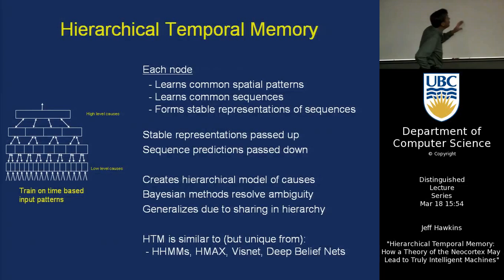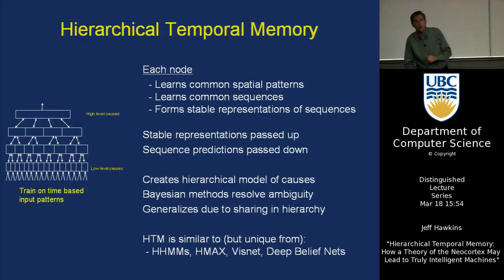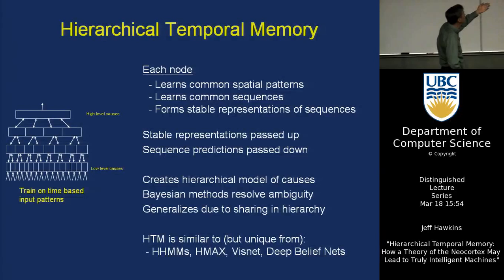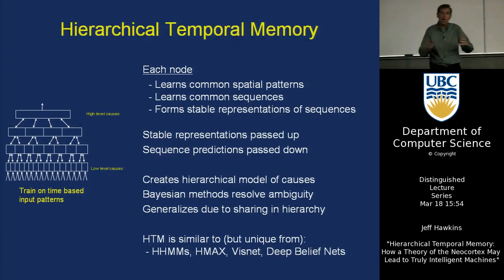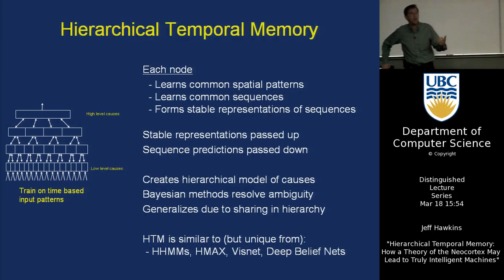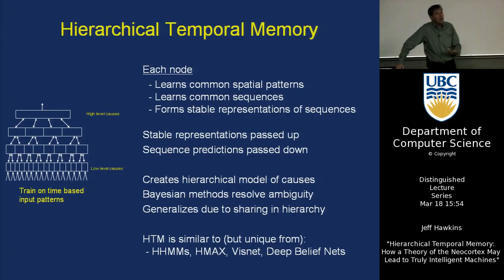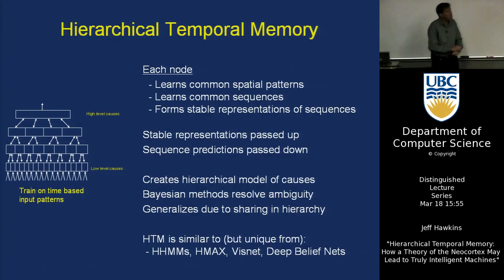This model of Hierarchical Temporal Memory is similar to a lot of other models that have come around in recent years — I point that as a positive thing. Machine learning people are coming to the belief that you have to have hierarchical representations and that time is important. Models like hierarchical hidden Markov models, Hmax, VisNet, and Deep Belief Nets from Jeff Hinton all deal with spatial or temporal characteristics and hierarchies. What's unique about HTM is that it's the whole package: an online learning system with spatial, temporal, and hierarchical components that is very biologically based.